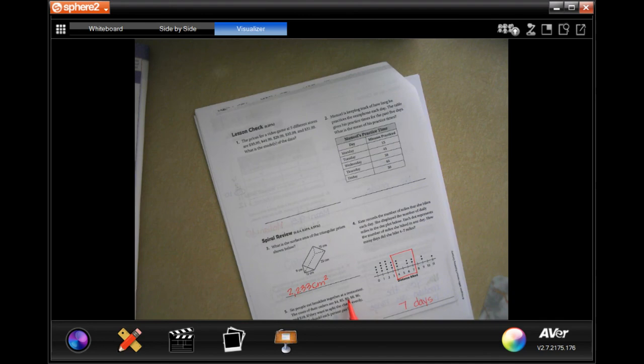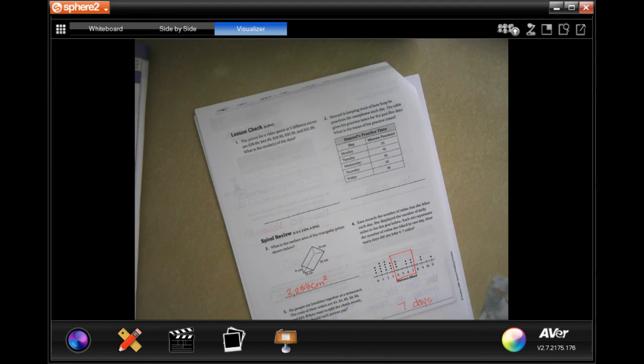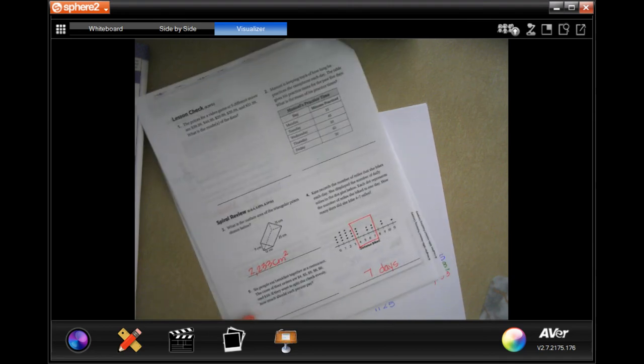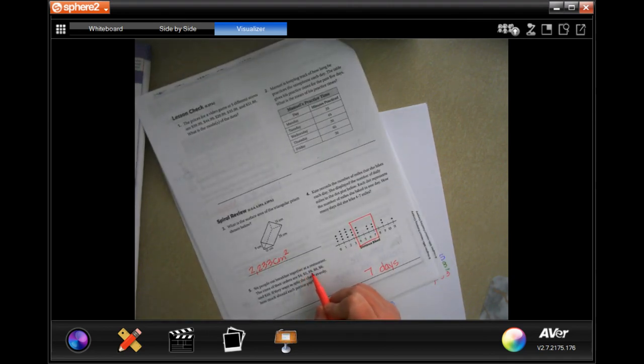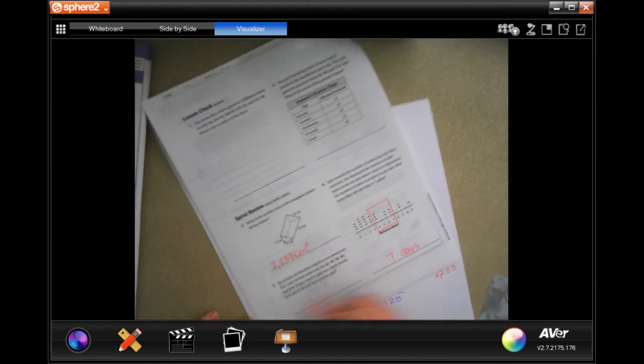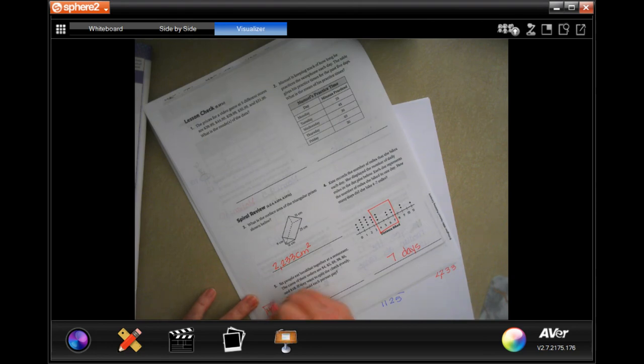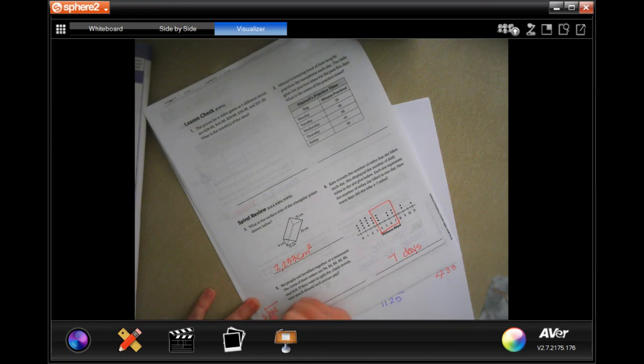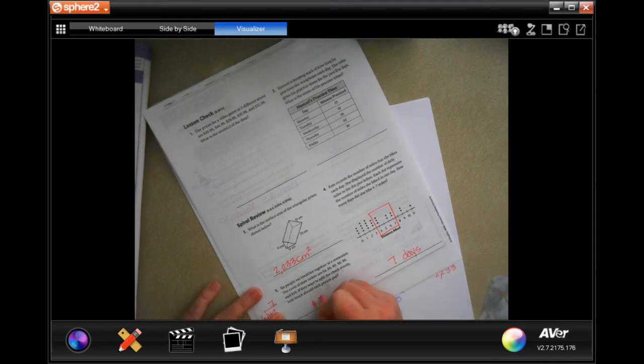6 people eat breakfast together at a restaurant. The cost of their orders are 4, 5, 9, 8, 6, and 10. If they want to split the check evenly, how much should each person pay? That one's easy. 4 plus 5 is 9. Plus 9 is 18. Plus 8 is 26. Plus 6 is 32. Plus 10 is 42. So, 42 divided by 1, 2, 3, 4, 5, 6. Well, 6 times 7 is 42. So, $7.